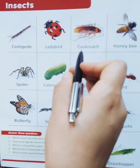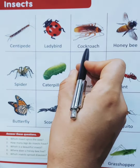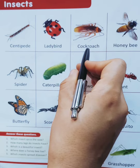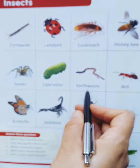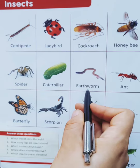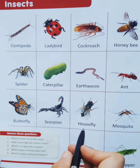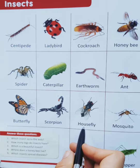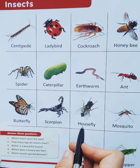And this is cockroach. This is cockroach. And this is earthworm. This is earthworm. And this is housefly. This is housefly.